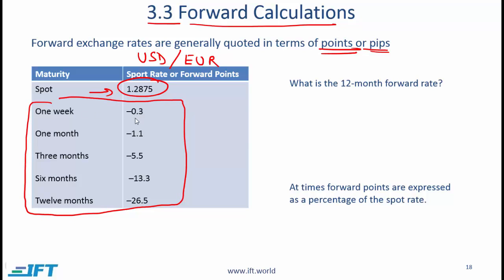This indicates the forward rate for a one-week forward transaction. This number over here indicates what the forward rate should be for a 12-month or one-year transaction — in other words, we are locking in a rate today for a transaction that will take place after 12 months.